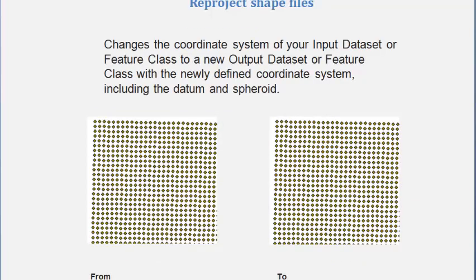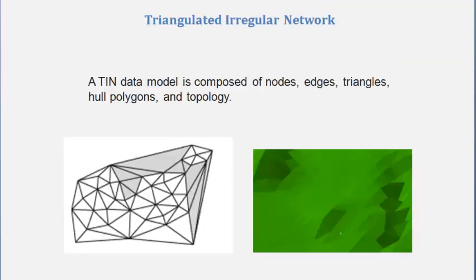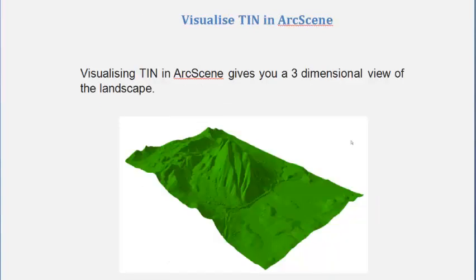After we convert the data to a shapefile, we're going to convert it from one datum to another. The first datum is HD66 — it's Canberra grid — and we're going to convert that into GDA 1994.